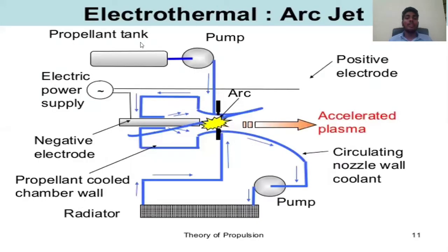Electrothermal arc jet components: propellant tank, pump, electric power supply, negative electrode, propellant-cooled chamber valve, radiator, pump, circulating nozzle valve, coolant, and accelerated plasma. Pulse electrode and arc. Nozzle block temperature and propellant flow, anode attachment zone.